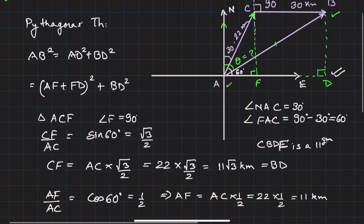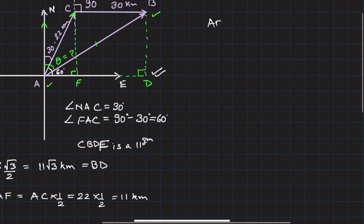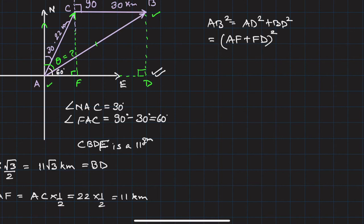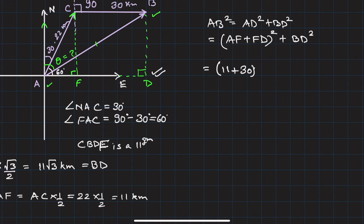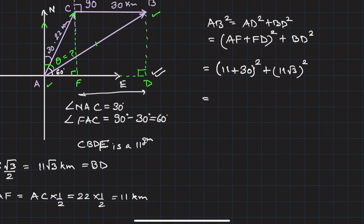Now we can solve: AB² = AD² + BD², where AD = AF + FD. AF is 11 kilometers and FD equals BC which is 30 kilometers, so AD = 11 + 30 = 41. Therefore AB² = 41² + (11√3)².